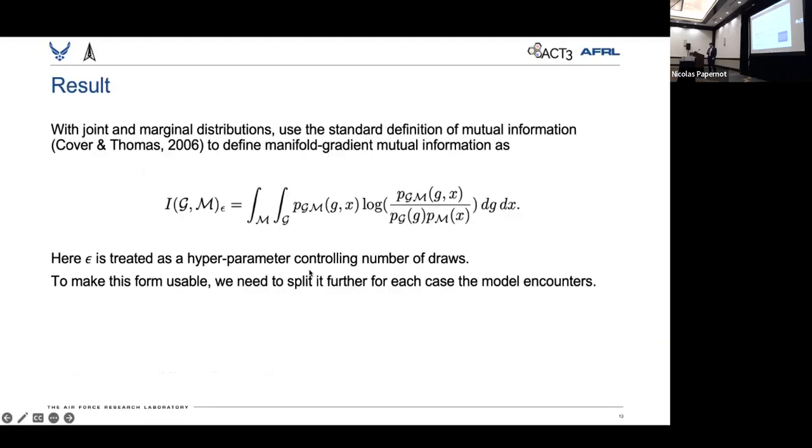There's a bit of derivation that I'm going to skip here for time, but with the joint and marginal distributions that we define in the paper, we then use the standard definition for mutual information and derive a closed-form solution for this manifold gradient mutual information.